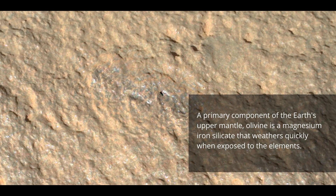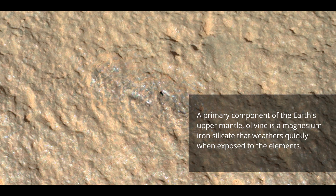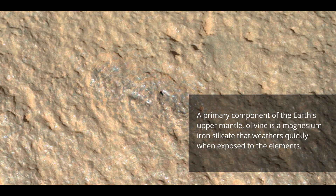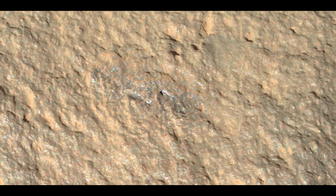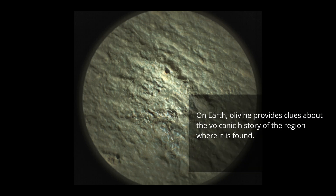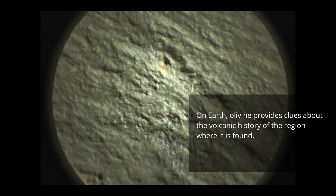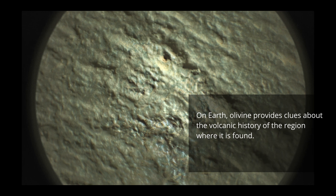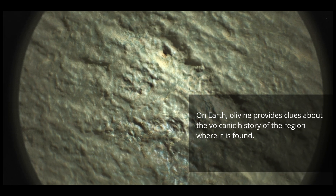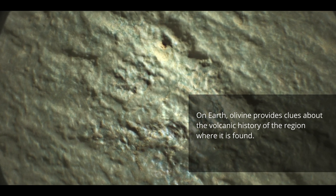A primary component of the earth's upper mantle, olivine is a magnesium iron silicate that weathers quickly when exposed to the elements. On Earth, olivine provides clues about the volcanic history of the region where it is found.